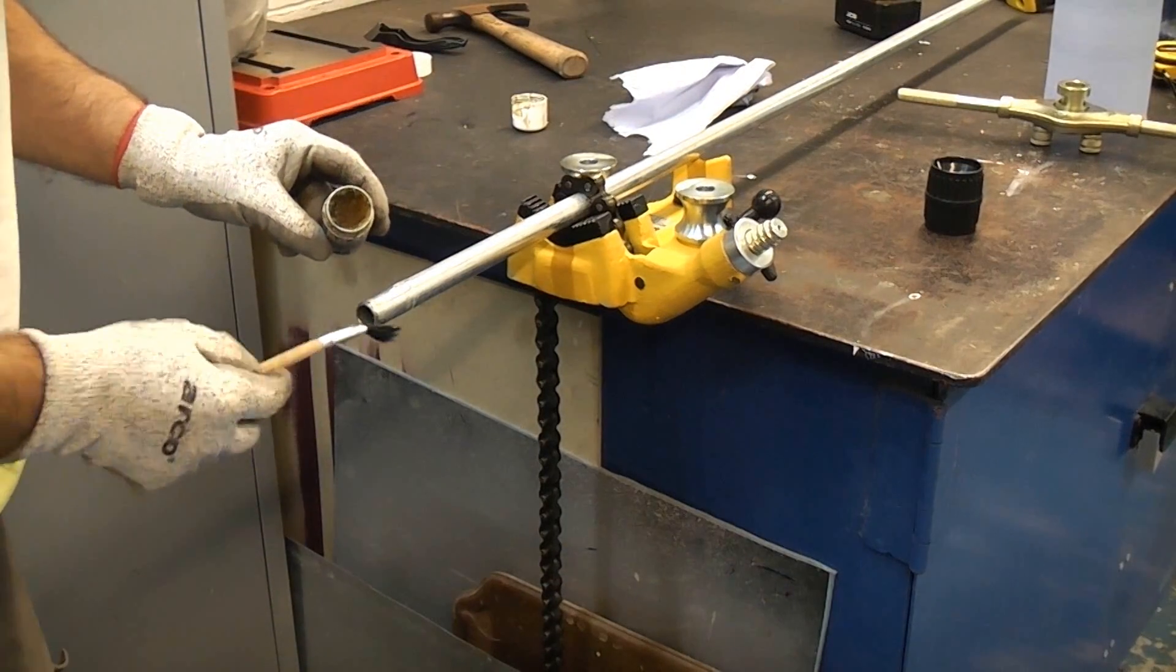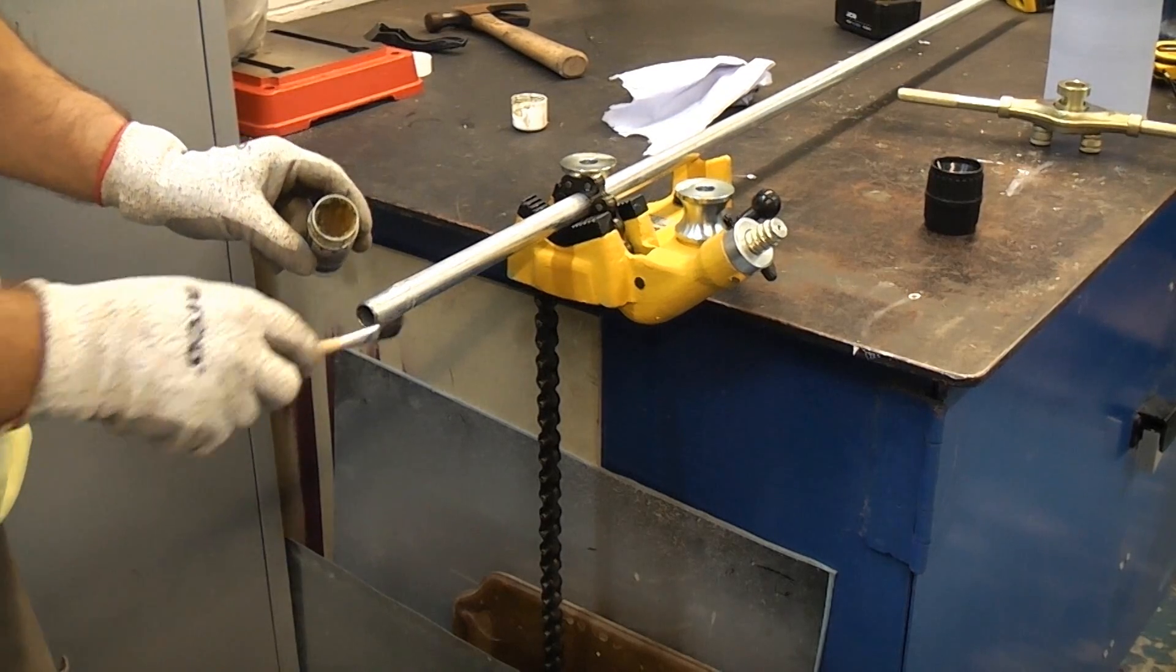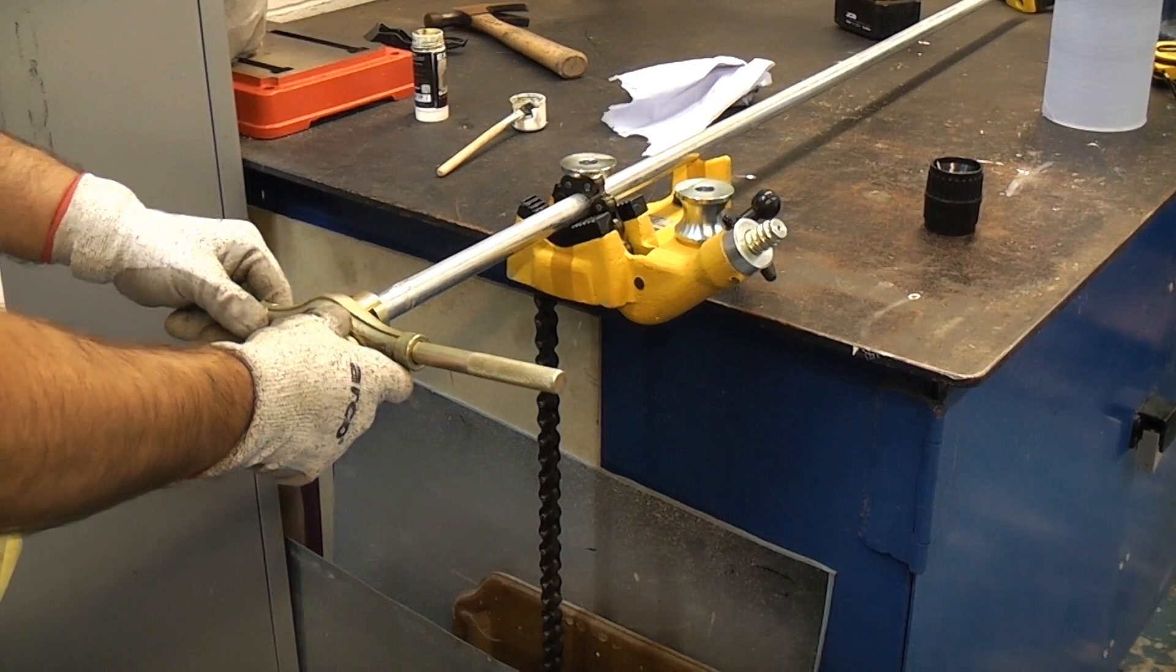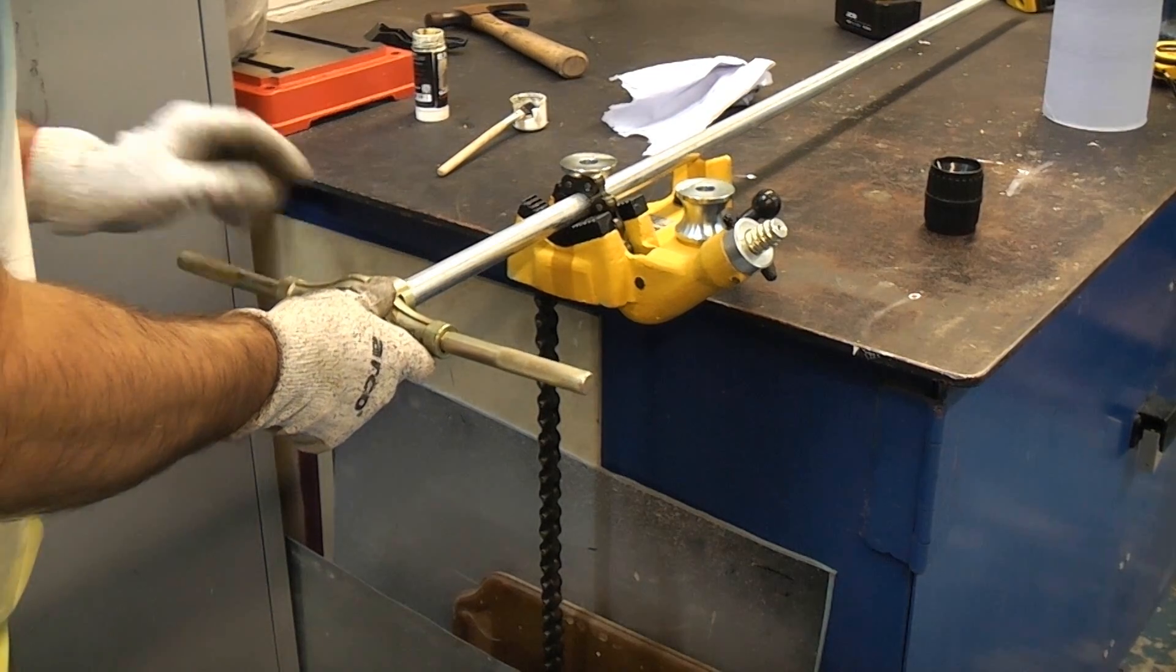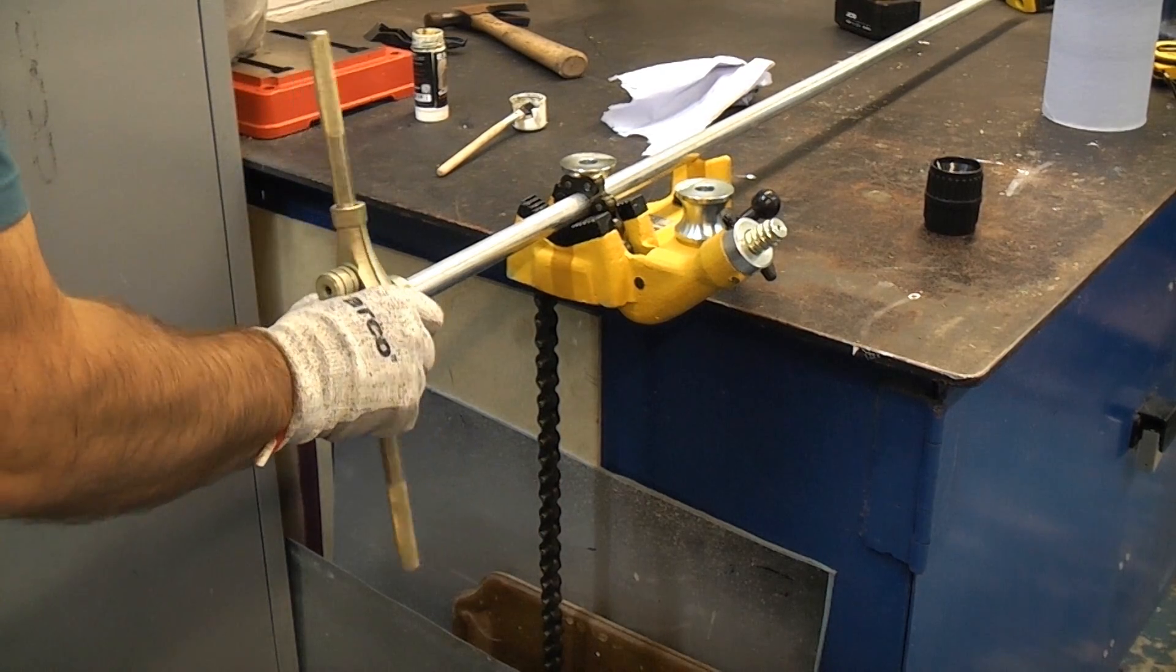We're now going to apply some more cutting paste. Then we're going to take the stock, we're going to push the guide straight on there. That will hold it relatively straight. Then we're going to turn that in a clockwise direction.